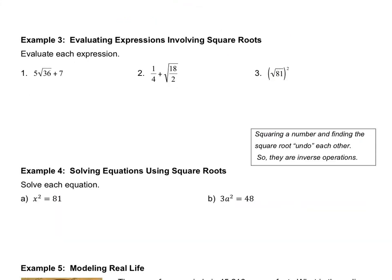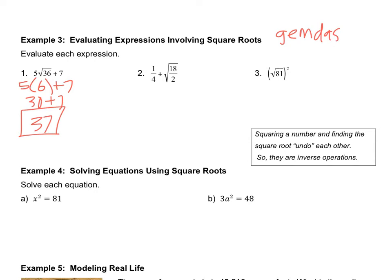In example 3 we follow the order of operations. Pause and do number 1 only, then press play. For number 1: the square root of 36 is 6, multiplied by 5, plus 7. When doing order of operations, you should know GEMDAS from 7th grade. Now that we talk about radical signs, we squeeze them in after exponents. So the order is: grouping symbols, exponents, radicals, multiplication, division, addition, subtraction.